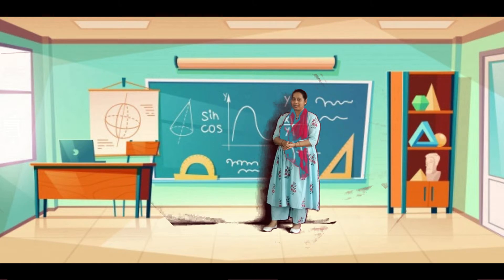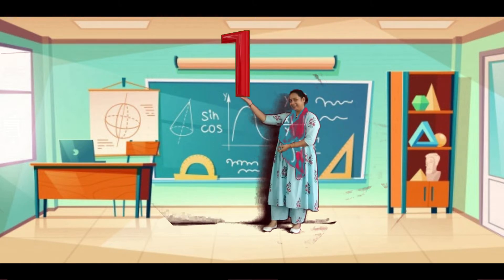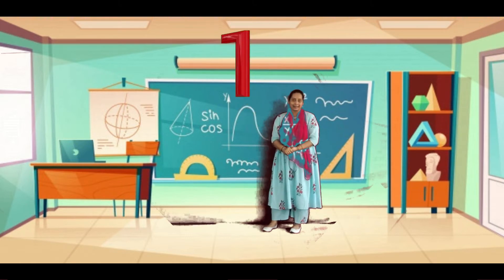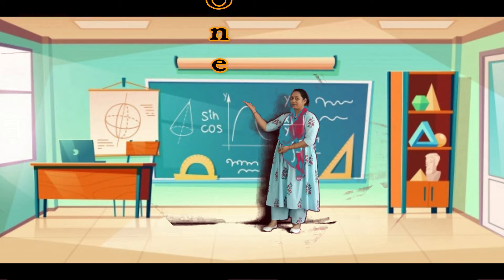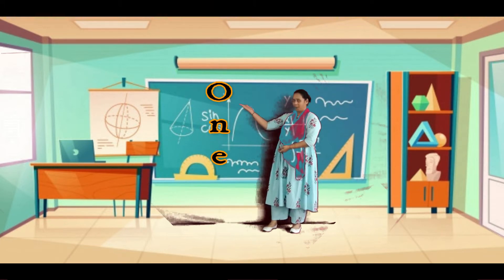Our first number is — see here — One. One is spelling, children: O, N, E.